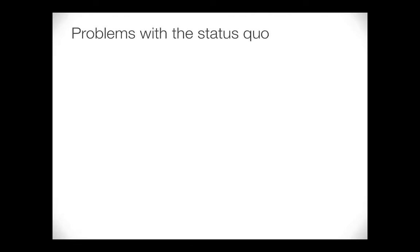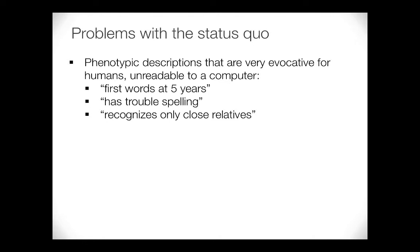Alternatively, 'ddd fmr' means developmental delay, dysmorphic face, and mental retardation. The alternative approach is check boxes with forms where you check off relevant phenotypes, but they have limited granularity. As soon as you want to specify something more granular you use the 'other' box and go back to free text. Many problems with the status quo: if a doctor's note says 'first words at five years,' that makes sense to a human — language delay — but means nothing to a computer. Someone else will say 'language delay,' someone else something different, and 'recognizes only close relatives' could indicate dementia.